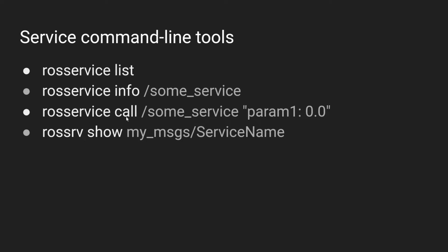'rosservice call' lets you call a service directly from the command line without writing any code. You provide the service name and then specify the request message in YAML form, which can be tricky to remember. If you hit tab twice you get an auto-completed version with all zero values. When the request message is very complicated this becomes cumbersome, so in that case it's better to just write a small Python program that calls the service, giving you full control over all the parameters.